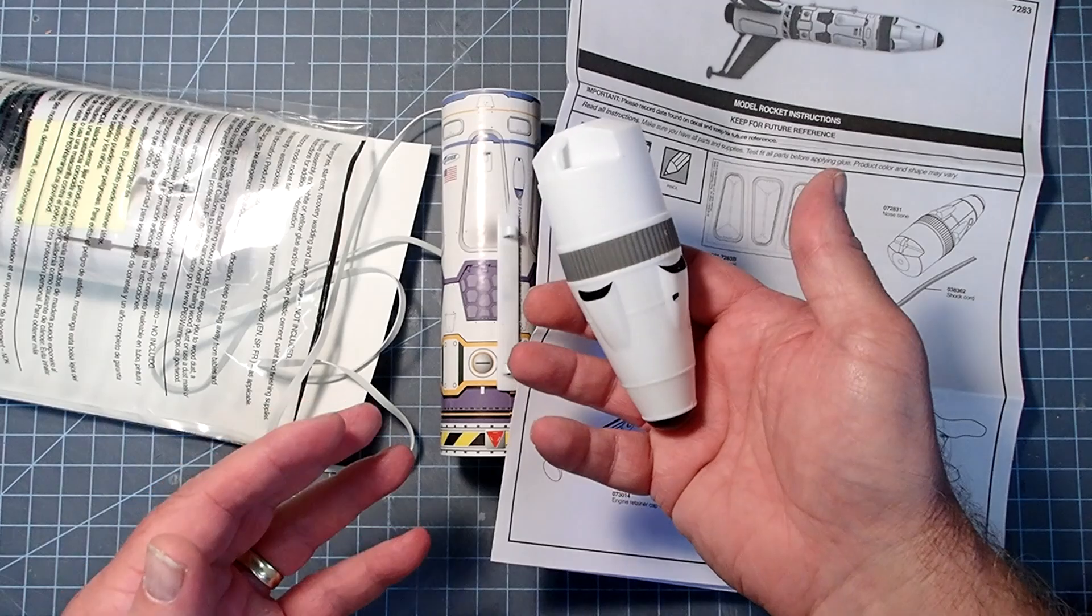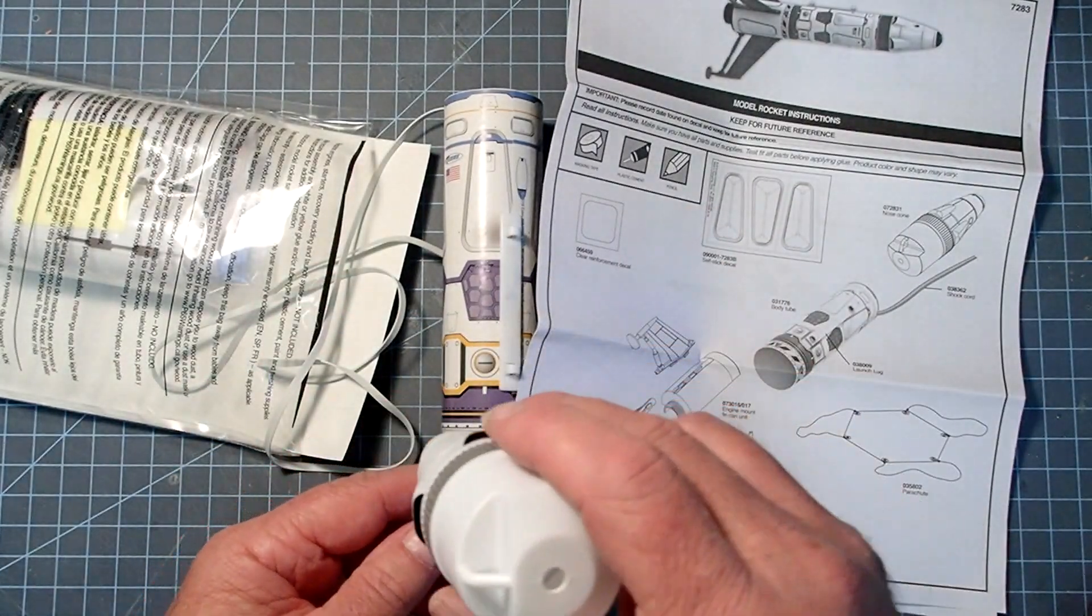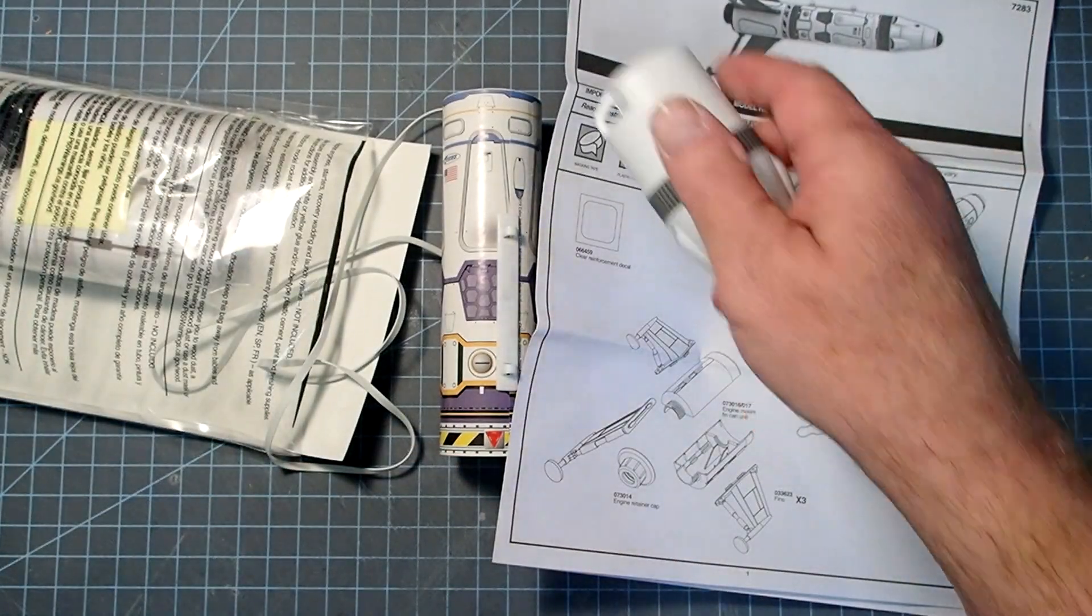Alright, so in here we have the main body tube. And that was the sound of the nose cone hitting the floor. Now, if you can't see it in the video but feeling this, it's actually got some clay nose weight in there.